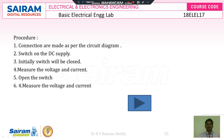To perform this experiment, look at the procedure. Connections are made as per the circuit diagram. Switch on the DC power supply. Initially the switch will be closed. Measure the voltage and current. Open the switch. Again measure the voltage and current. To perform this experiment live, look at the following video.